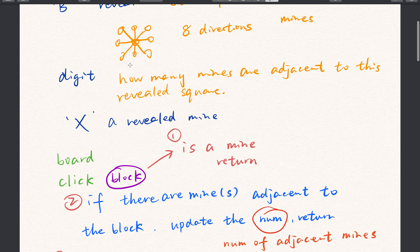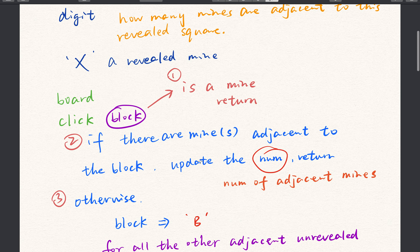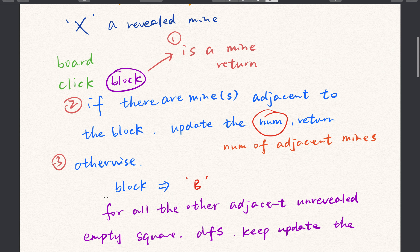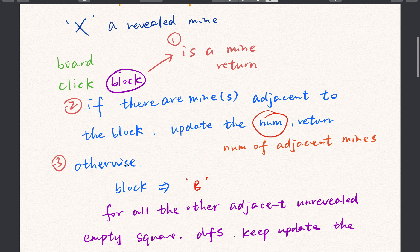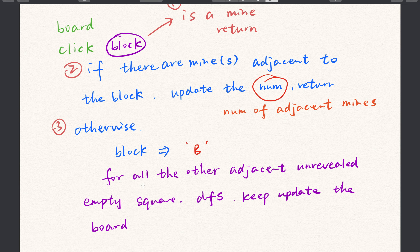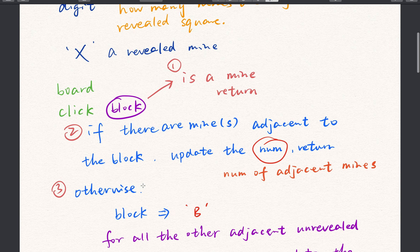How do we get the number? We just check the eight directions to see whether there is a mine. If there is a mine, we just return after updating the number. The third case is if there are no mines adjacent to this block — we need to change this E to B and do depth-first search for the other adjacent unrevealed empty squares. That is the algorithm.